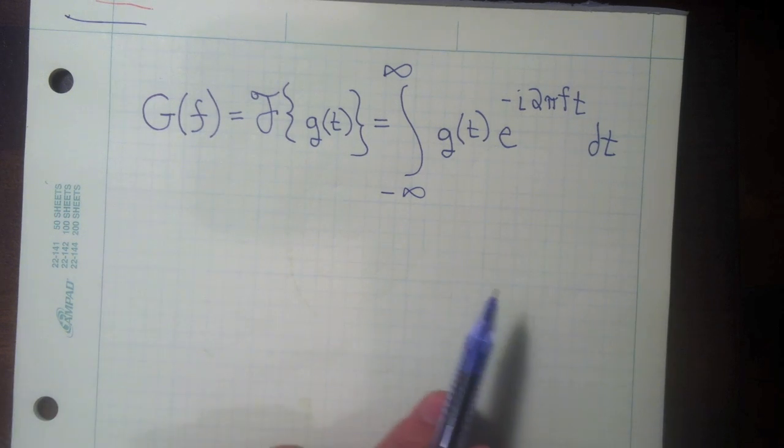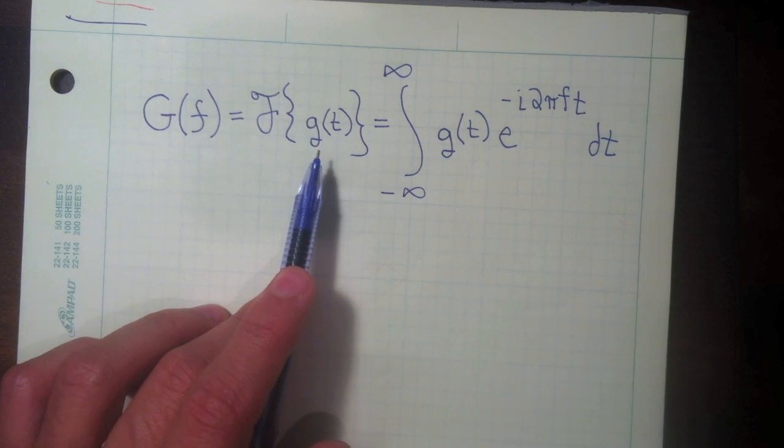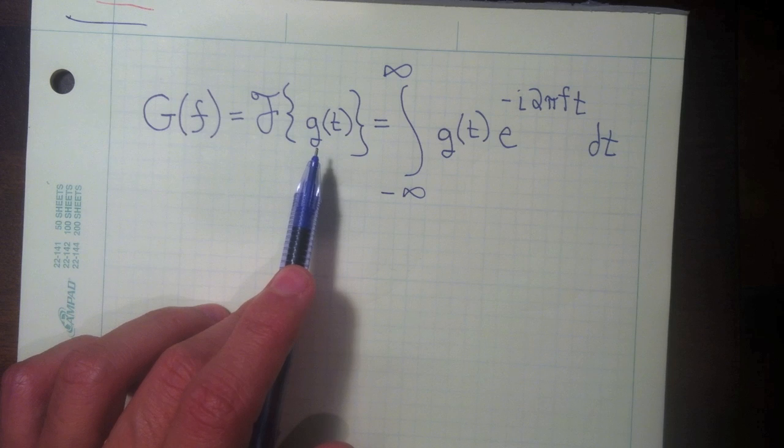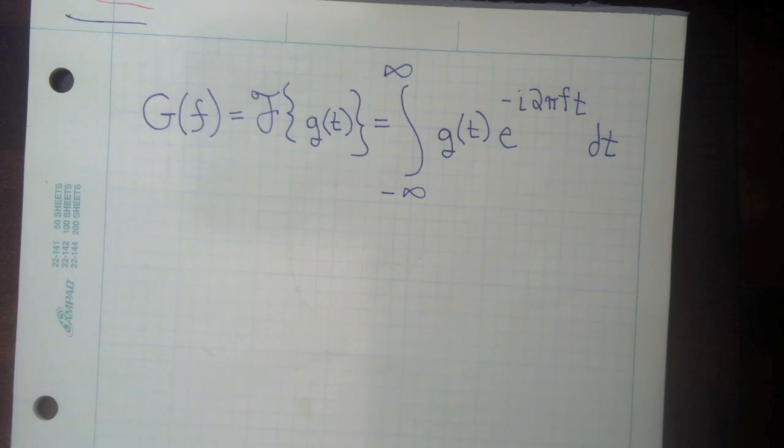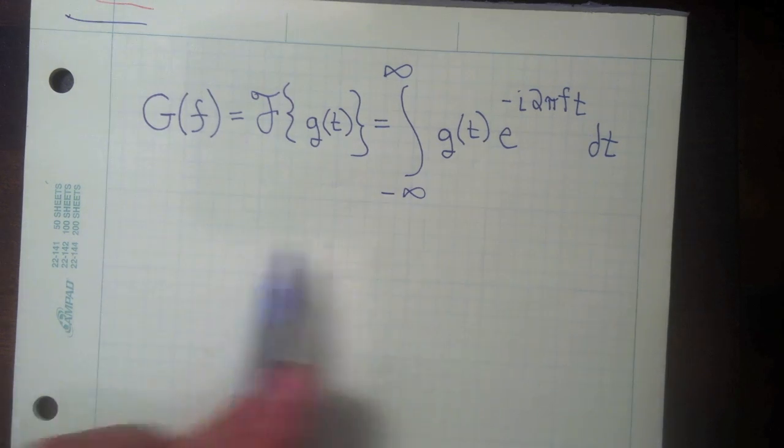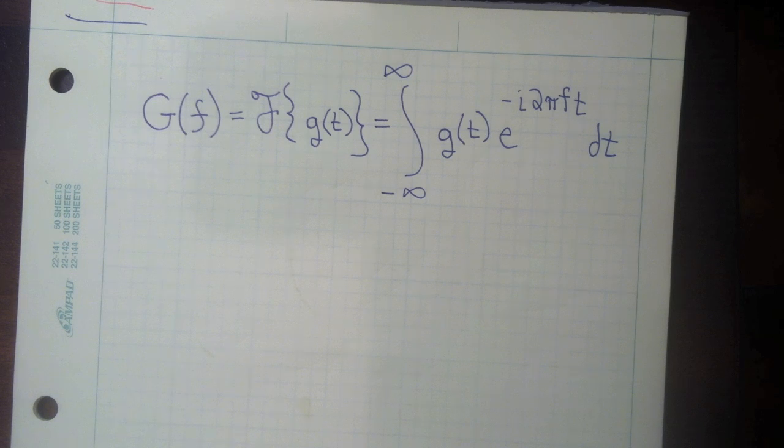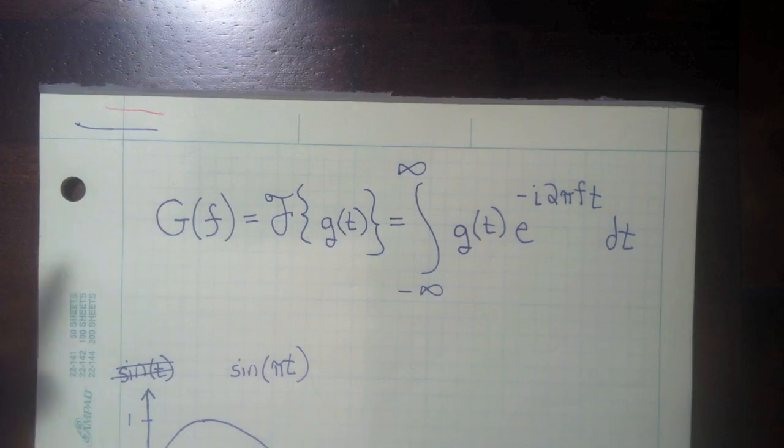So this is the definition of the Fourier transform of a function g of t, which is just some waveform or signal or whatever you want it to be. And so this Fourier transform looks very complicated, integrals and complex numbers and all that, but it turns out it's actually somewhat intuitive and pretty simple. So the goal of this video is to explain this without much math, just explain what the Fourier transform is and why it's so important.